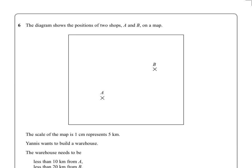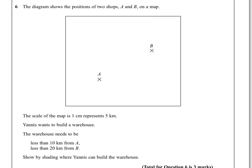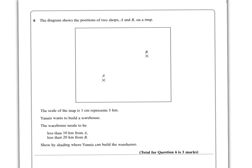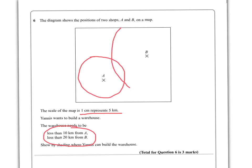Question 6 — get your compass out, because here we go. We've got our standard locus question. They come up every year. Scale of the map: 1 centimeter equals 5 kilometers, and it's got to be less than 10 kilometers from A and less than 20 from B. So how many fives in 10? Open your compass 2 centimeters, draw a circle. How many fives in 20? That's four. So I open my compass four centimeters, and then I color in the bit in the middle because that's where my warehouse can go. Three marks: one for each circle, one for coloring in the right bit.